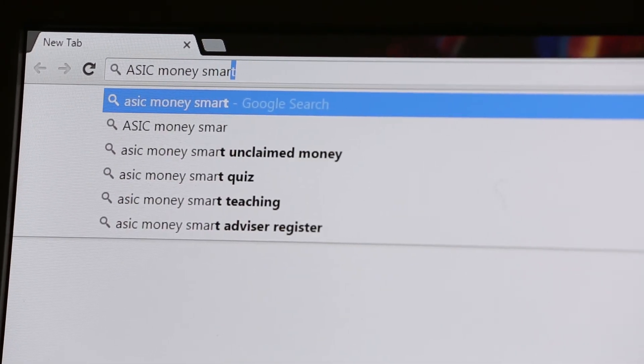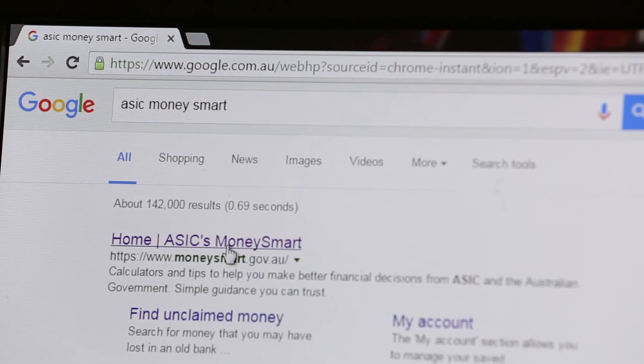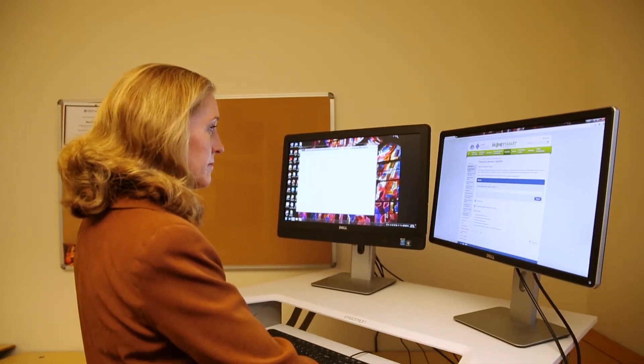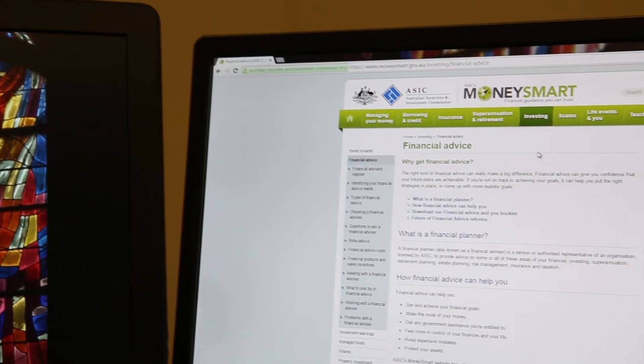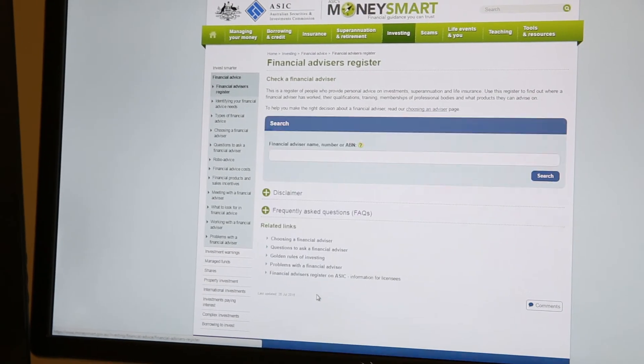The financial advice sector in Australia is currently undergoing significant change. The government has put forward proposals to ensure that financial advisers have degrees and undertake ongoing professional development, and that they register so that clients and firms can check that a financial adviser is properly qualified.